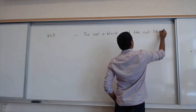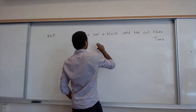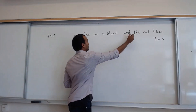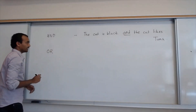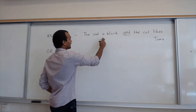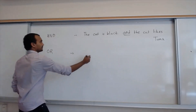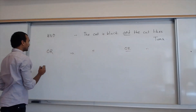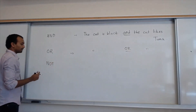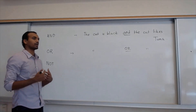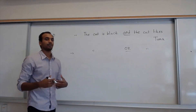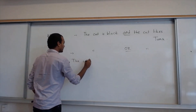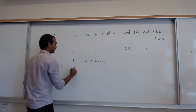You can write this as 'the cat is black and likes tuna' — a common sentence using the connective 'and.' Similarly, you have the connective 'or.' With the same two sentences you can say 'the cat is black or it likes tuna.' And you have 'not' — to negate a sentence, you can use the connective not. This is not exactly a connective in the sense that it connects two sentences; it's an operation on a single sentence.